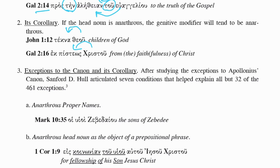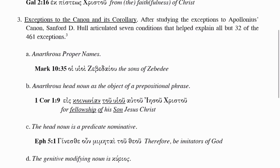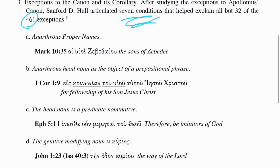So that's the canon and its corollary — kind of simple — except there are exceptions. A fellow by the name of Sanford D. Hull looked at all 461 exceptions that have been tabulated in the New Testament, and then added some other kinds of rules or conditions that would help explain all but 32 of these exceptions.